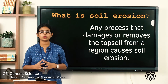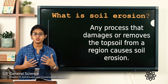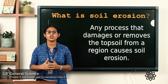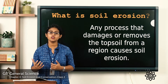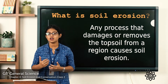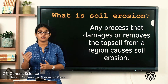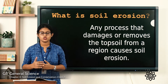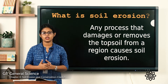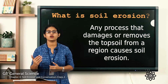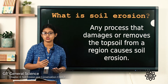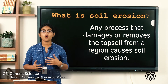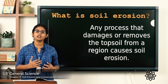So what is soil erosion? Soil erosion is a process by which the topsoil — the topmost or outermost layer of the soil, which we learned about in the last class — gets washed away or blown away. That is what we call soil erosion.